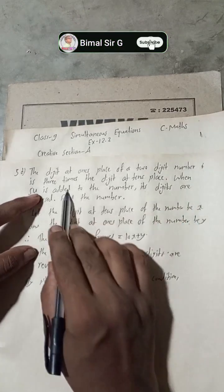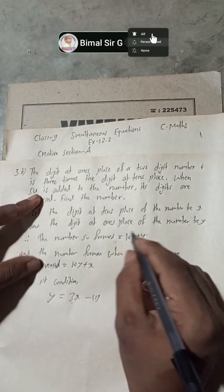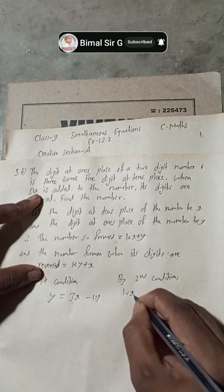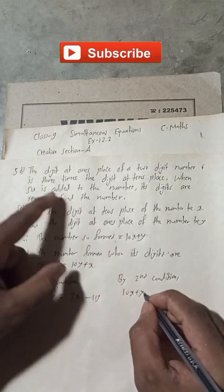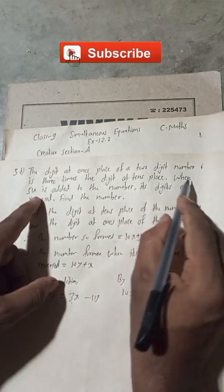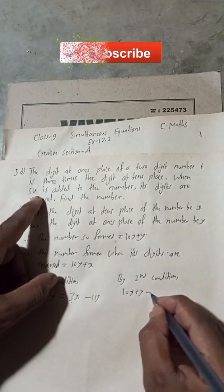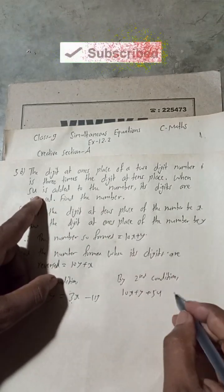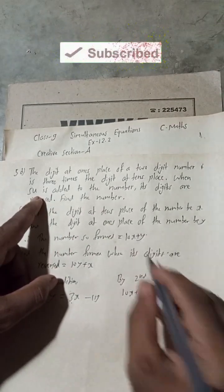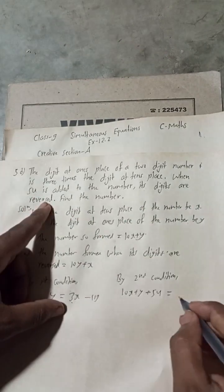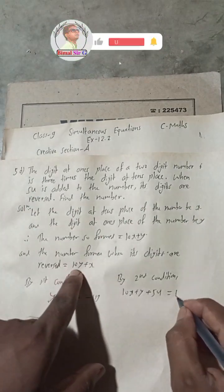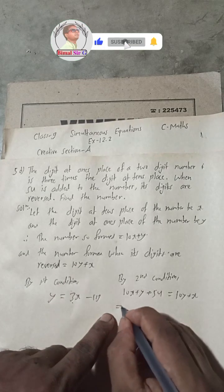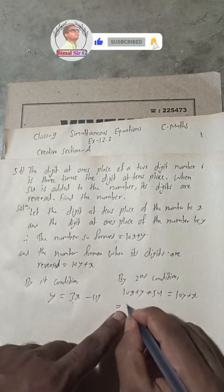By the second condition: when 54 is added to the number — which we supposed is 10x plus y — then the resulting number has its digits reversed, meaning it equals 10y plus x. So we write: 10x plus y plus 54 equals 10y plus x.